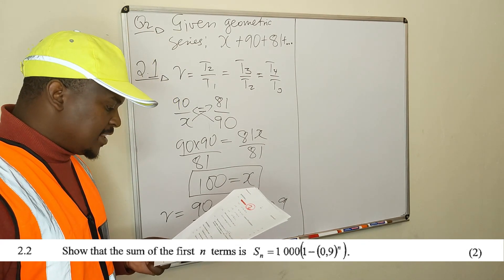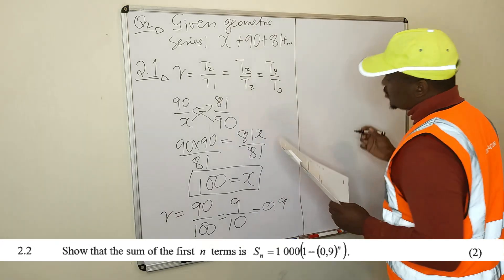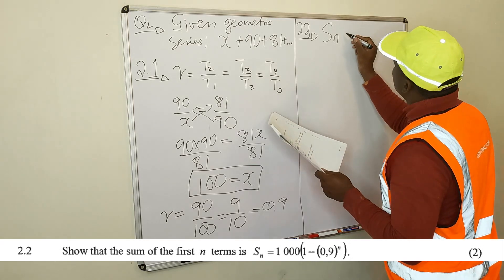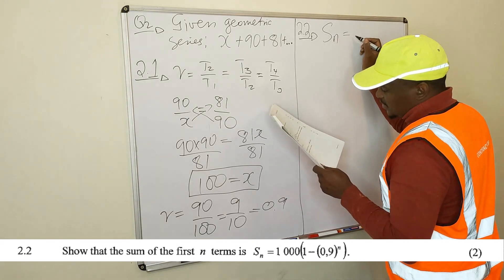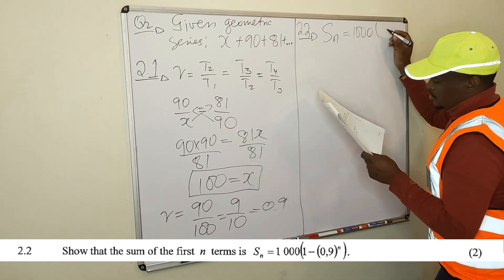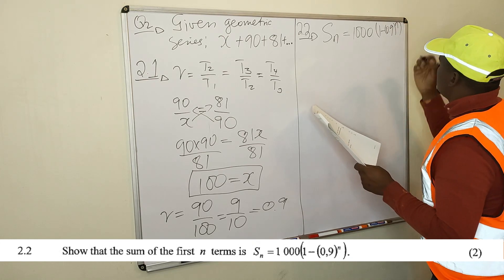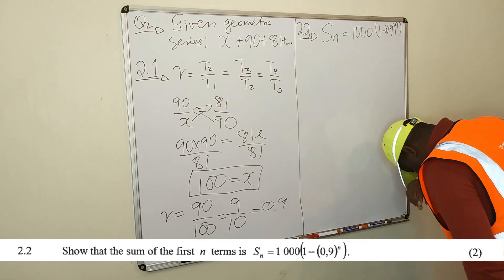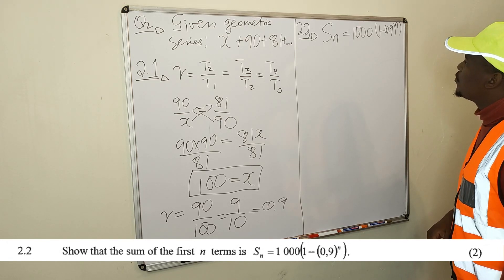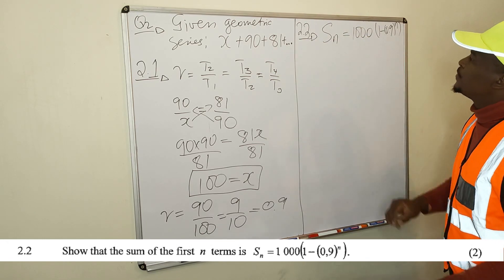They are saying 2.2: show that the sum of the first n terms of the sequence is equal to 1000 times 1 minus 0.9 raise to n. So they are saying we must show that the sum of the first n terms of this series is equal to this.